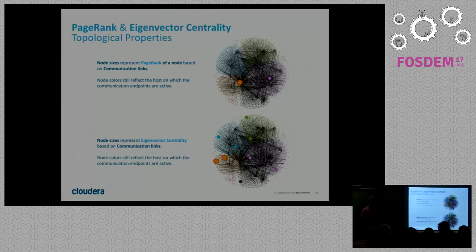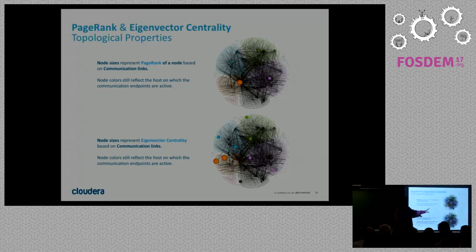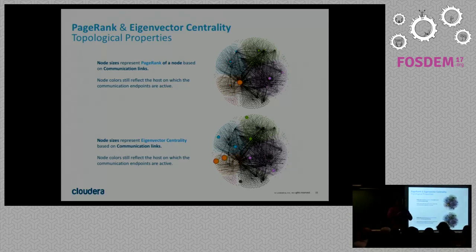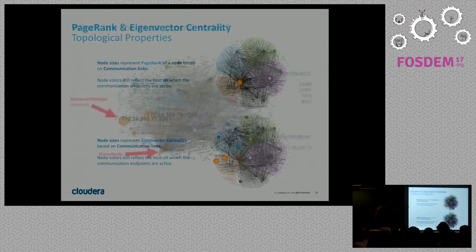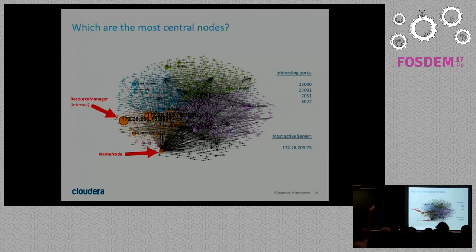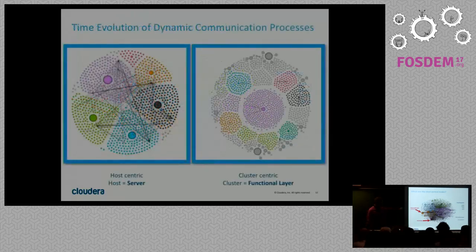This is still a field where research has not delivered final answers. With Gephi and Spark we are able to calculate different topological properties, but the interpretation is still an open problem. Our goal is to track the whole system. Our initial question was: how much of the network traffic is related to HDFS, how much to Spark shuffle and sort, and all these different questions that arise if you want to tune the system.